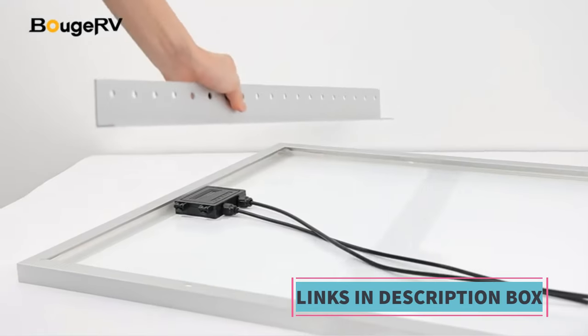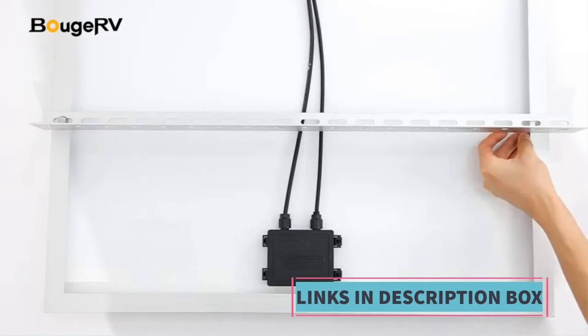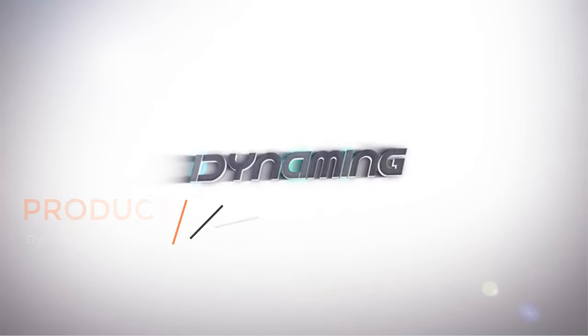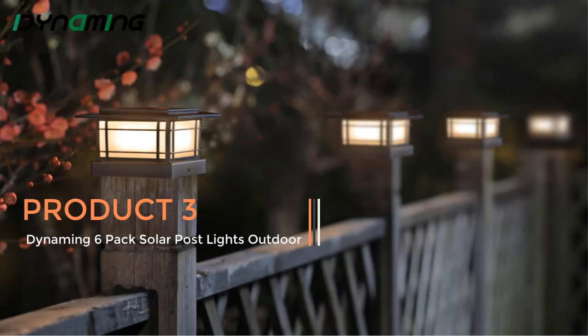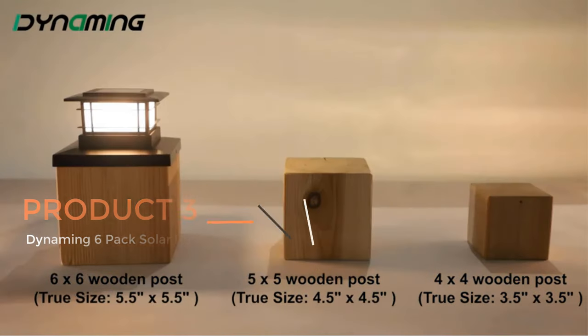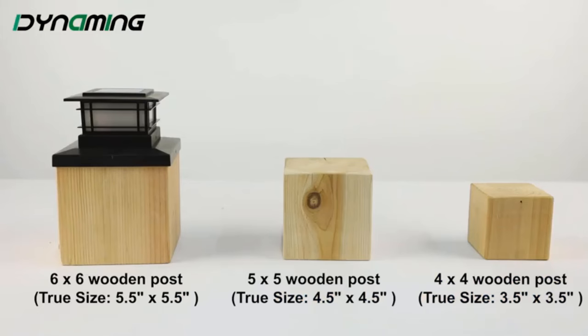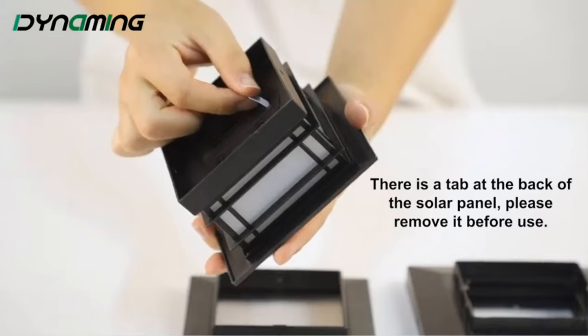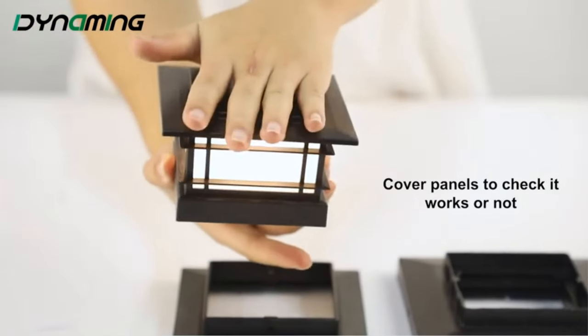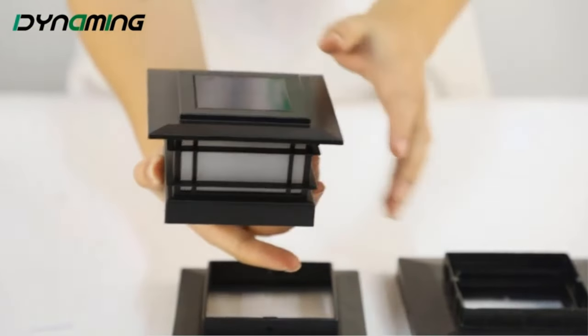Product 3: Dynaming 6-Pack Solar Post Lights Outdoor. The Dynaming 6-Pack Solar Post Lights Outdoor is a set of solar-powered lighting fixtures designed specifically for outdoor use. These lights are intended to be mounted on fence posts, adding both illumination and decorative appeal to garden, deck, or patio areas.